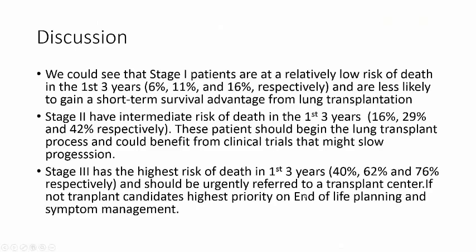Stage 1 patients had a relatively low risk of death over the first three years — 6%, 10%, and 16% respectively — and are less likely to gain a short-term survival advantage from lung transplantation. Stage 2 patients had intermediate risk — 16%, 29%, and 42% — and should begin the transplant evaluation process and could benefit from clinical trials to slow disease progression. Stage 3 patients had the highest risk — 40%, 62%, and 76% — and should be urgently referred to a transplant center. If not transplant candidates, discussions should focus on end-of-life planning and symptom management.